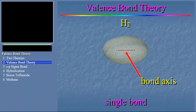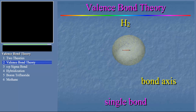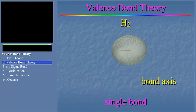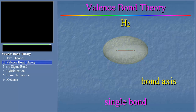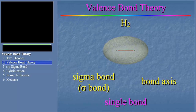You can see this symmetry if we rotate the molecule. This kind of covalent bond — a bond which is symmetrical about the bond axis — is called a sigma-type bond. We'll spend the rest of this module talking only about sigma-type bonds.